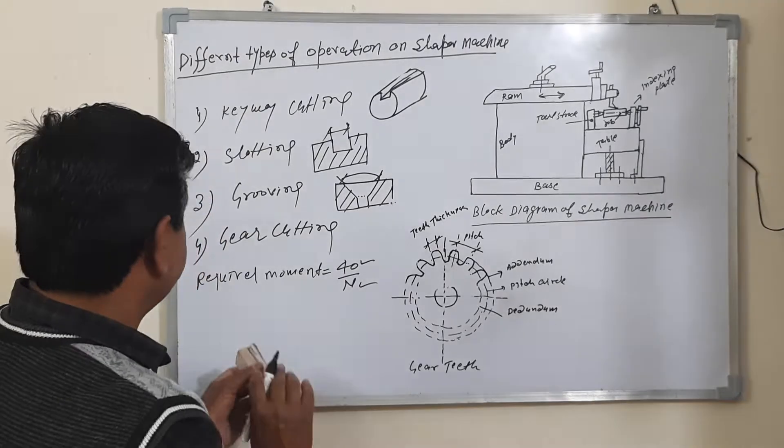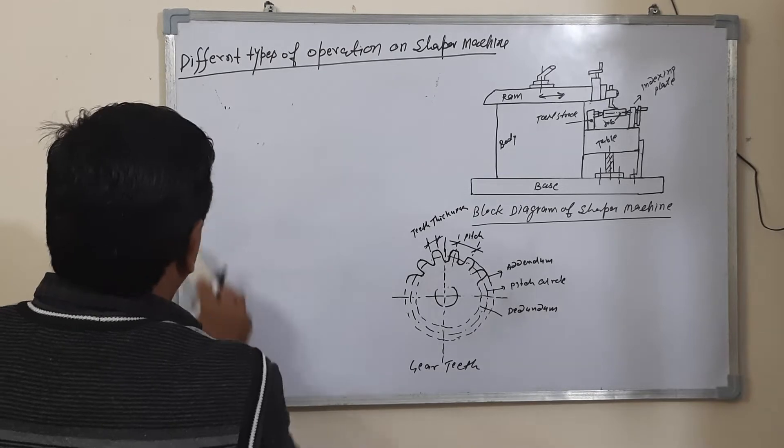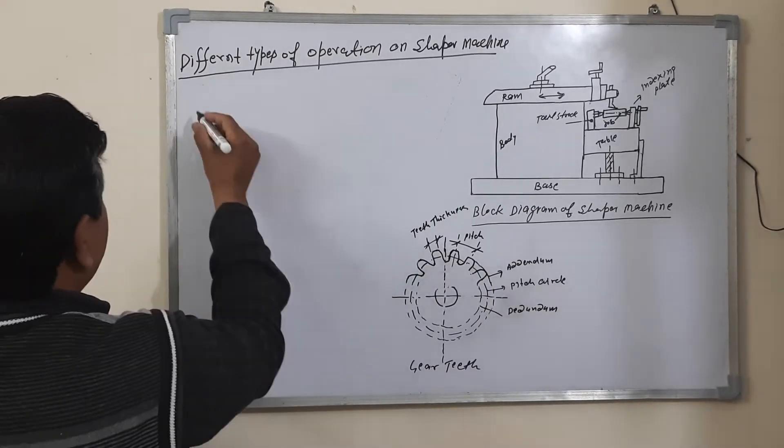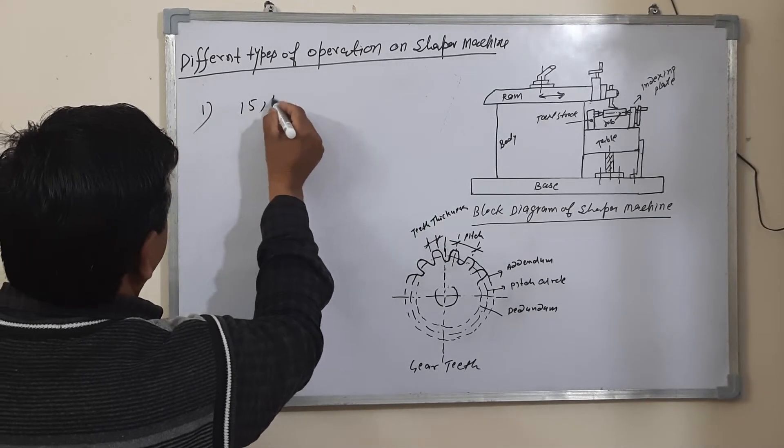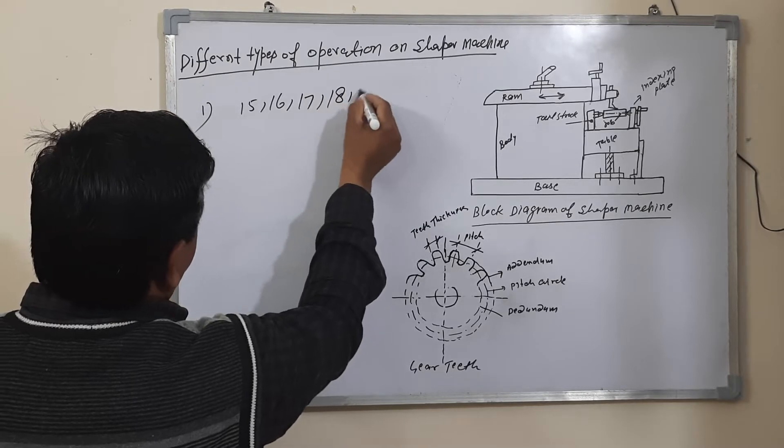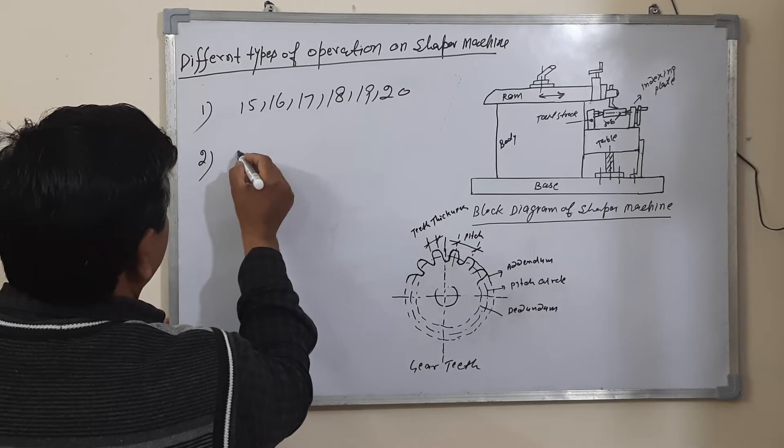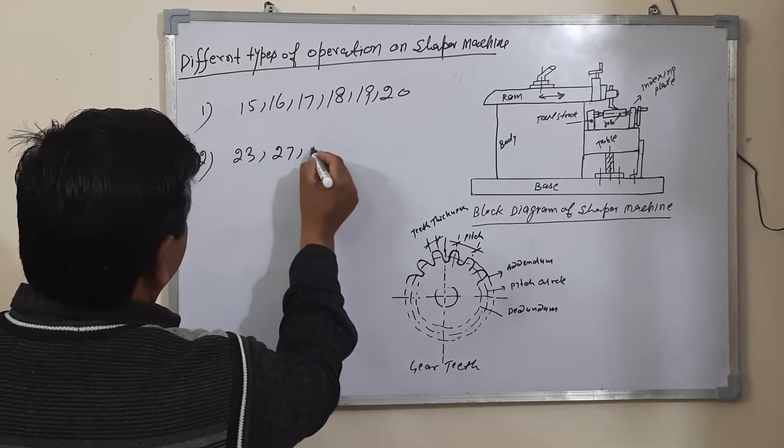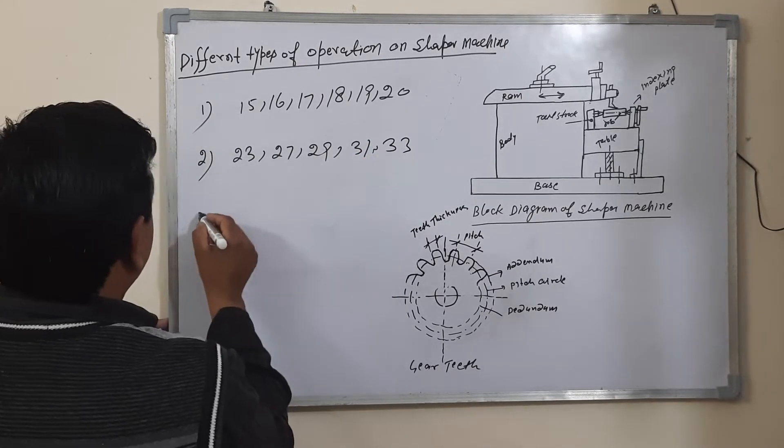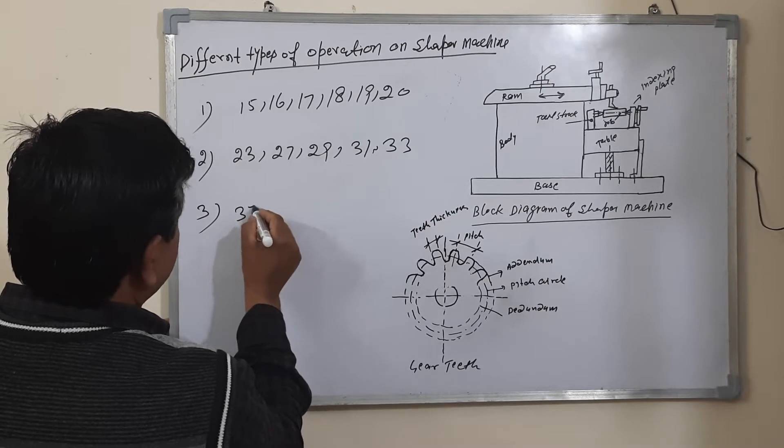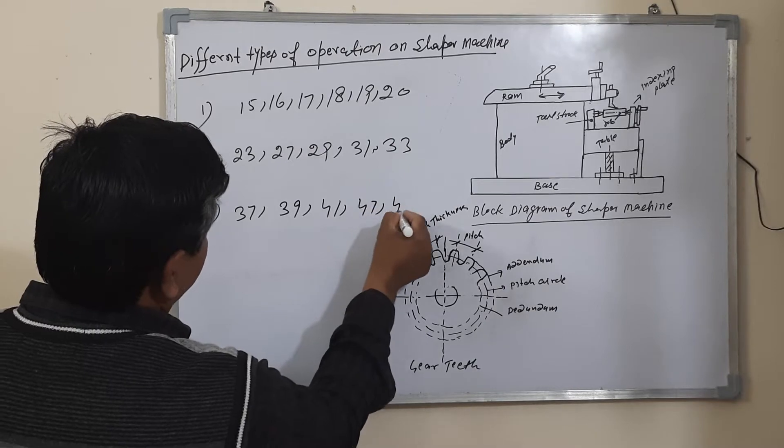There are three types. Number one is 15, 16, 17, 18, 19, 20. Number two is 23, 27, 29, 31, 33. Number three is 37, 39, 41, 47, 49.